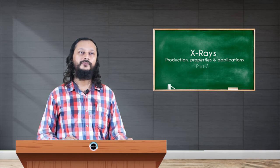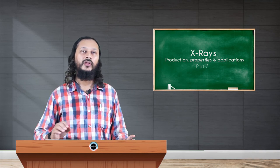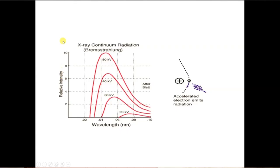Moving on, as you can see in this graph, this graph shows relative intensity on the Y-axis and the wavelength that is emitted on the X-axis. As you can see these graphs for different voltages from 20 kilovolt to about 50 kilovolt, X-rays of different intensities are produced.